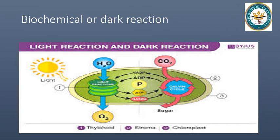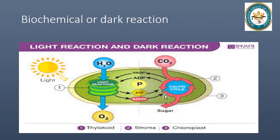The next type of reaction is the biochemical or dark reaction. This reaction does not directly require light. ATP and NADPH produced in the light reaction are used in the dark reaction, where different chemical reactions produce sugar. After these reactions, NADPH and ADP are converted back to NADP+ and ADP, which are then recycled in the light reaction. This overall process is called photosynthesis.